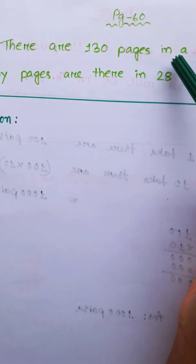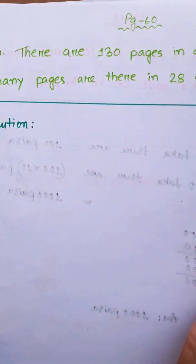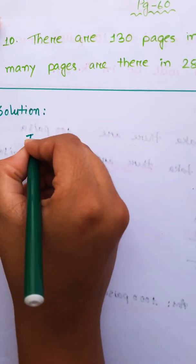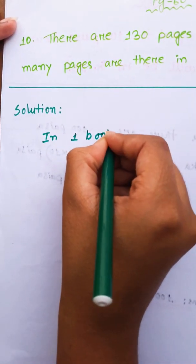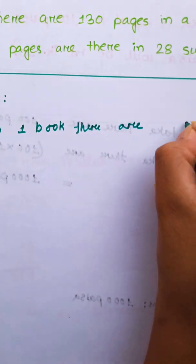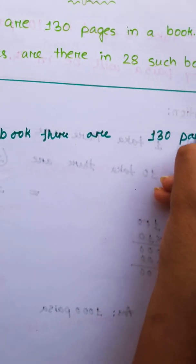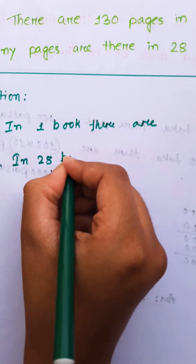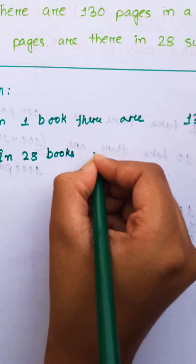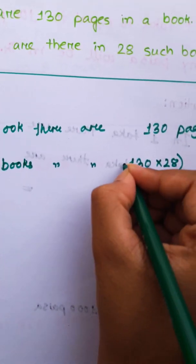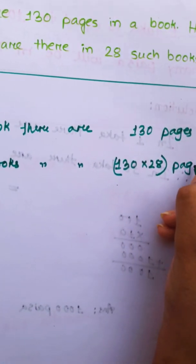The next math problem: there are 130 pages in 1 book. How many pages are there in 28 such books? In 1 book there are 130 pages. Therefore, in 28 books there are 130 x 28 pages.